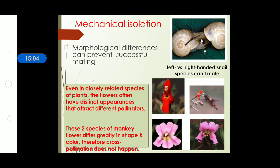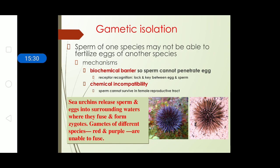In mechanical isolation, snail species with left-versus-right-handed shells of the same species cannot mate because their reproductive organs cannot reach each other. In plants shown, closely related species cannot pollinate due to differences in structural features. In gametic isolation, sea urchins release sperm and eggs into surrounding waters where fusion forms zygotes, but the gametes of red and purple sea urchin species are unable to fuse due to biochemical barriers or chemical incompatibility.